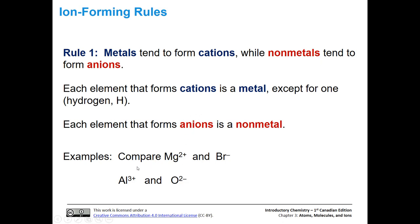Let's look at some examples. Magnesium two plus has a positive overall charge, so it is a cation. Looking on the periodic table, it's in group two, and the elements in group two are metals. Bromine, forming the bromide anion, gained one extra electron — that's what the negative one means. Magnesium, because its charge is two plus, lost two electrons.